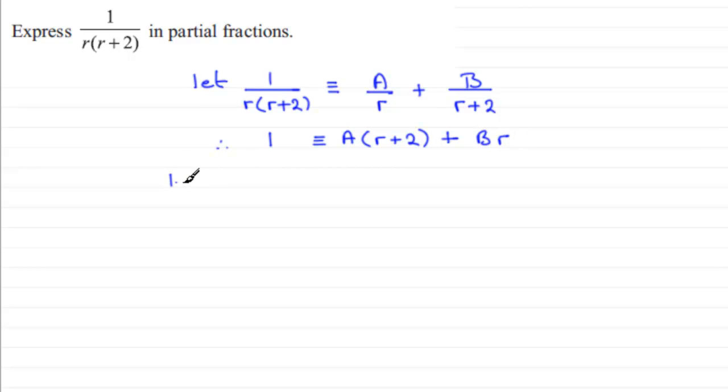That's where we start and that is to let r equal 0. And if we do that we've got 1 equals, and putting 0 here just leaves us with 2A. And this term will go out as 0. So you can see it follows that A must equal a half.